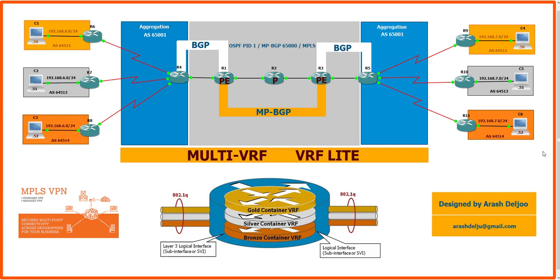In this scenario, I am going to talk about VRF Lite between the PE and CE, and also using sub-interfaces on the PE router. In the previous scenario, we learned how to configure VLANs and sub-interfaces in the aggregation layer. Now I am going to talk about VRF Lite configuration on the aggregation layer router and how to configure sub-interfaces in the PEs.